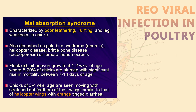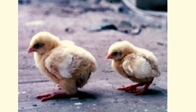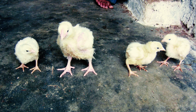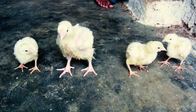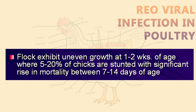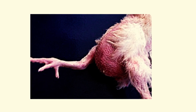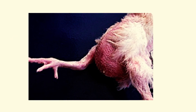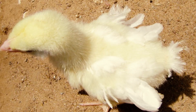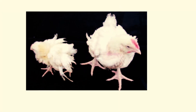The next disease is Malabsorption Syndrome. In Malabsorption Syndrome, the affected flock shows uneven growth — the birds are not uniform in size. Particularly, 2-week-old birds are mostly affected. They are stunted with a distended abdomen, poor pigmentation of the skin, and poor feathering with broken, twisted feathers.